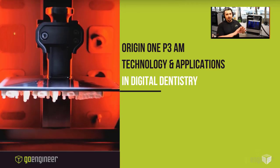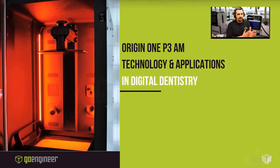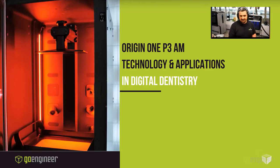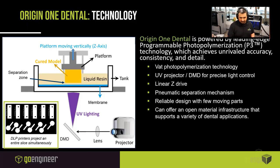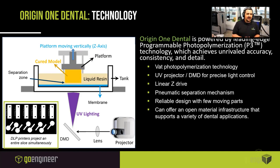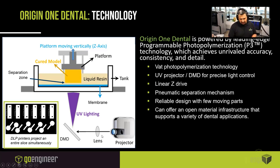Now moving away from PolyJet, let's talk about the exciting Origin One system — a totally different animal. It is a vat polymerization system. The Origin One Dental is powered by P3, Programmable Photo Polymerization technology, which achieves unrivaled accuracy, consistency, and detail. Unlike stereolithography that shoots a laser to trace vectors on top of a resin pool, P3 projects the entire layer all at once onto the underside of a clear resin vat — making it very fast and geometry-independent in build speed.